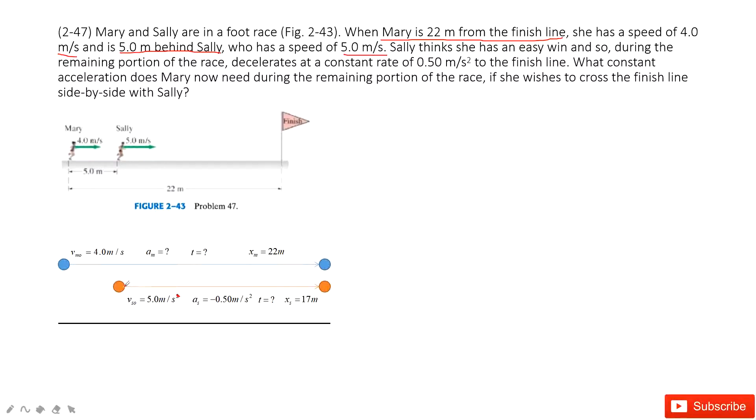When we look at Sally, she is just ahead of Mary by 5 meters and she also moves faster than Mary. Sally moves at 5 meters per second and Mary is 4 meters per second, so Sally thinks she will get an easy win.